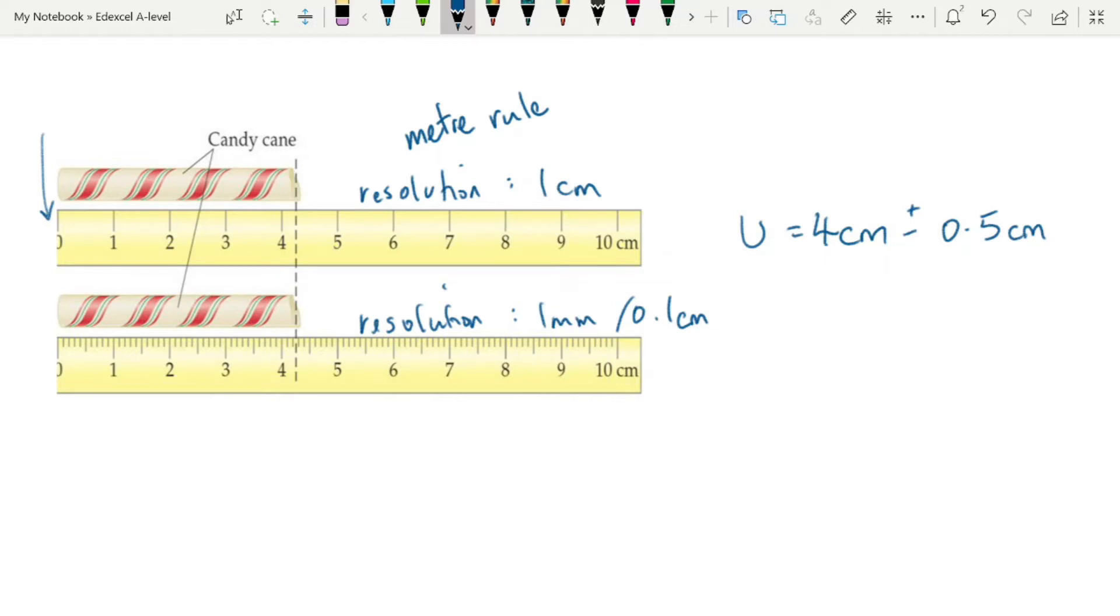The bottom one has a better resolution and therefore half the smallest scale division is going to be a smaller number. Here our uncertainty is 4.2 centimeters plus or minus 0.05.